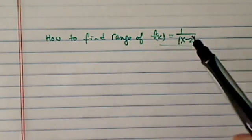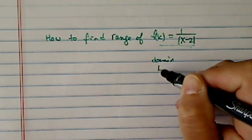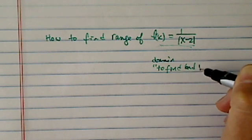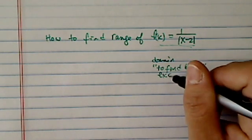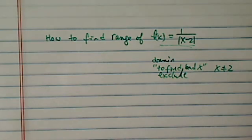We're asked to find the range of this function. Obviously, the domain is pretty easy because the domain is basically finding bad x and excluding it. So here x cannot be equal to 2; everything else is fine.